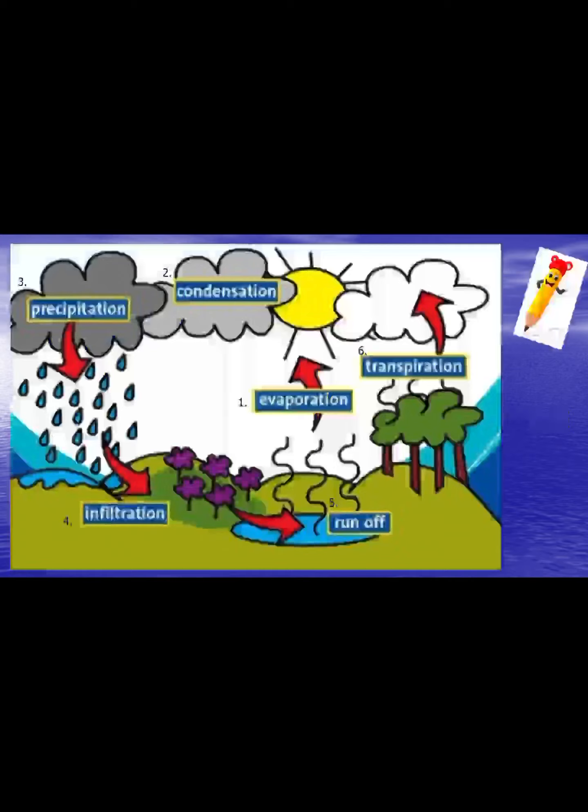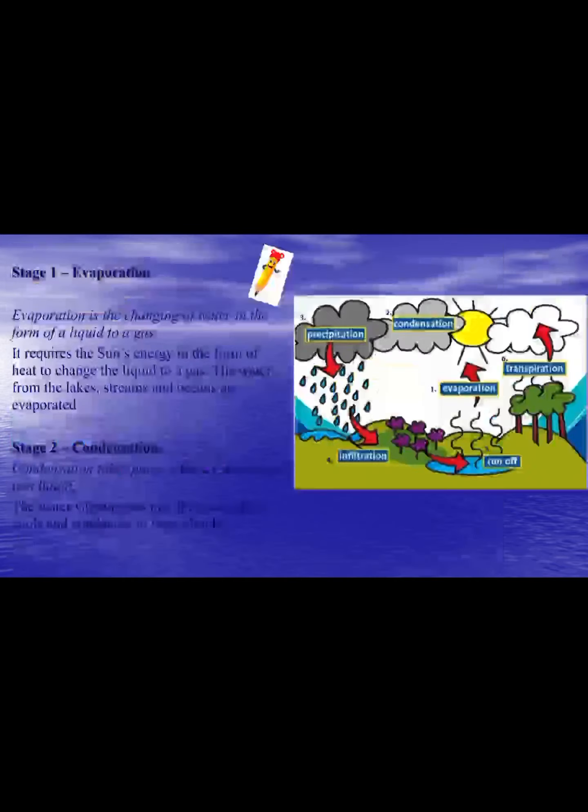Condensation: the water vapor collects in clouds. As the clouds rise higher they get colder and the vapor condenses back to liquid water. As the clouds collect more and more liquid water they can't hold onto it all, so precipitation occurs — it rains. Precipitation can also be sleet, hail, or snow. Infiltration is where water passes down into the ground, and runoff is water flowing into rivers, lakes, and oceans again.